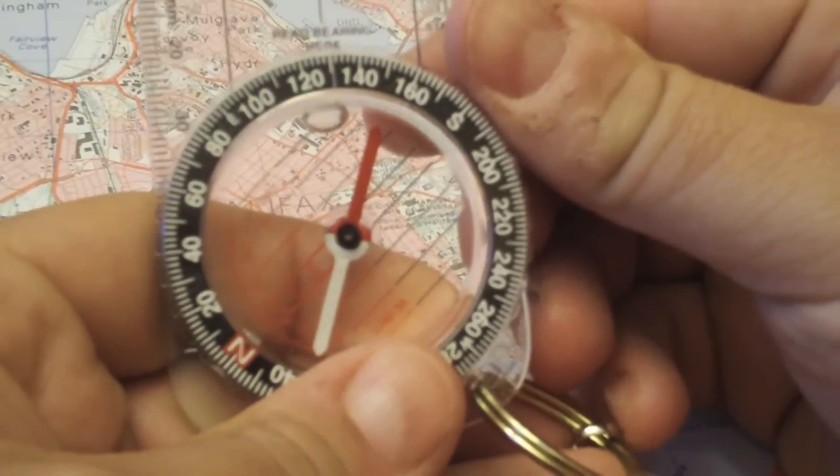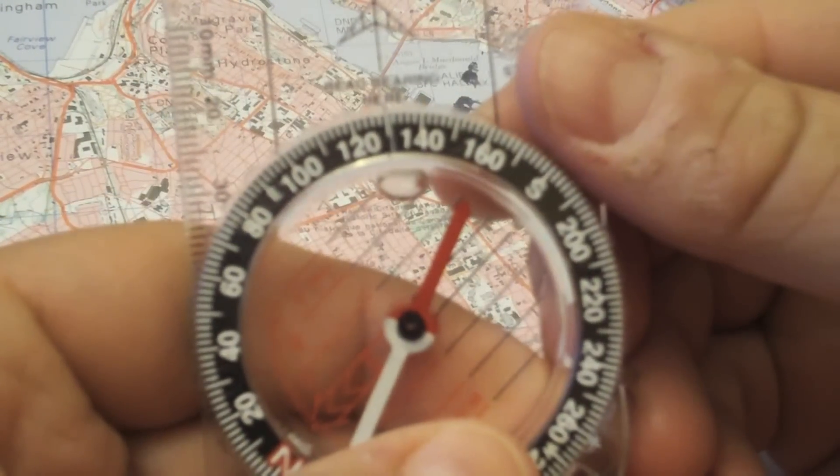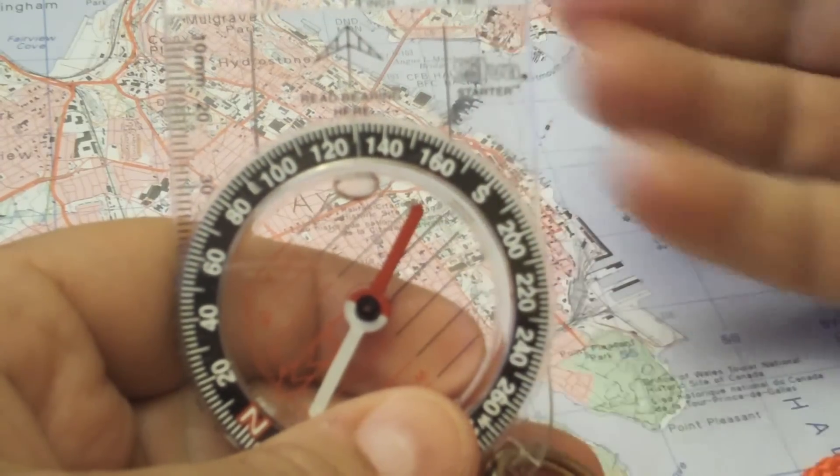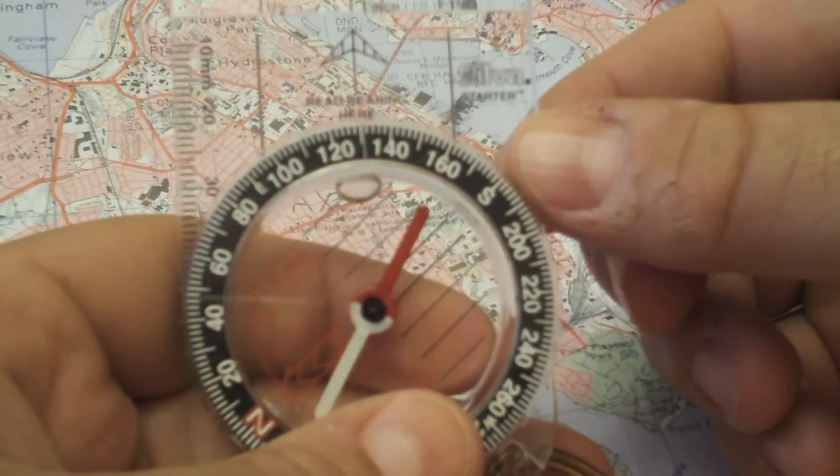And we end up with 130, almost 131 degrees. So if I had a better scaled map, probably get something a little bit closer. And if you want to double check on your GPS to see if the bearing's straight, you can probably use this.